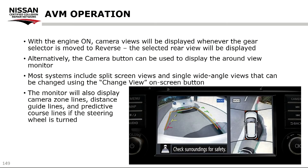AVM operation: with the engine on, camera views will be displayed whenever the gear selector is moved to reverse — the selected rear view will be displayed. Alternatively, the camera button can be used to display the around view monitor. Most systems include split screen views and single wide angle views that can be changed using the change view on-screen button.